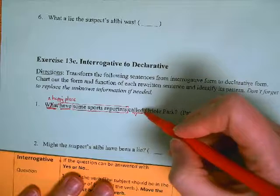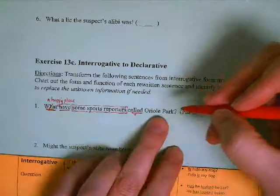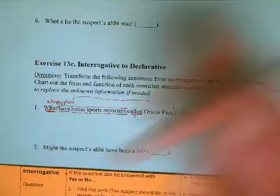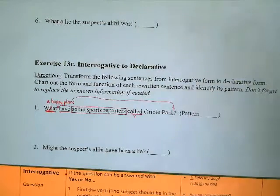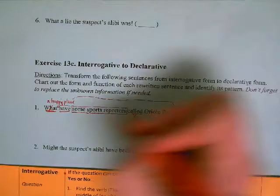Oriole Park, a happy place. This little happy place thing renames Oriole Park, right? What have they called it? It's going to be an object complement because Oriole Park is going to be my direct object, so it's going to go all the way at the end. Now I'm going to write my sentence out in the expected declarative form.